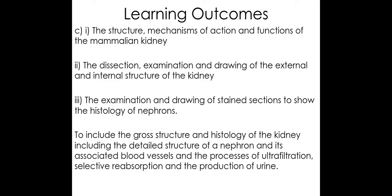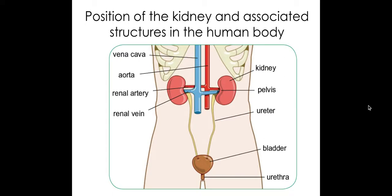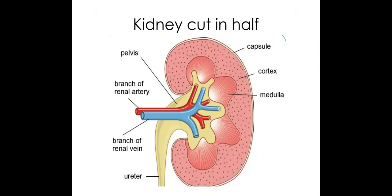Welcome biologists. This session we're going to be taking a look at the structure of a kidney. There are functions that we need to know about which are listed at the bottom, but we're not going to get to those in this video — I'll do them in separate videos. For this one we're just going to look at the structure of the actual kidney. The kidneys can be found underneath the rib cage at the back of the body and they're important for filtering out waste products from the blood.